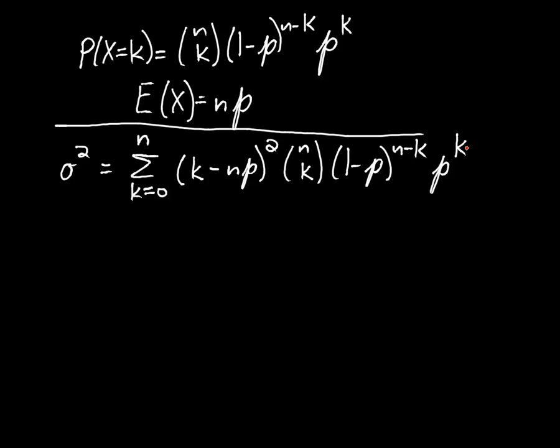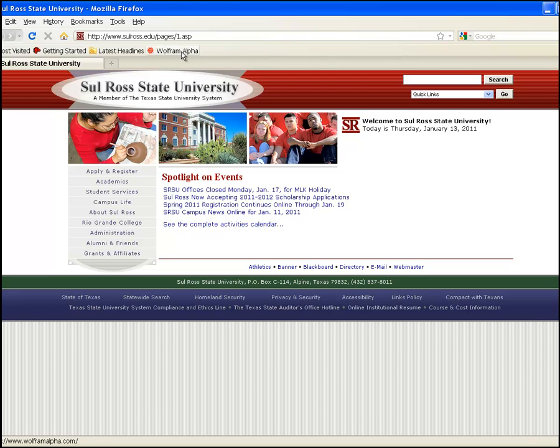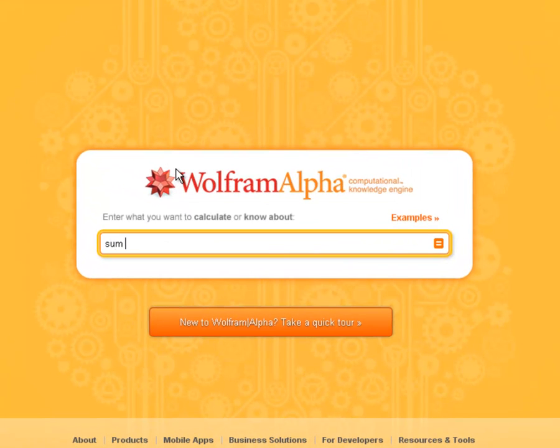This expression is going to be entered in Wolfram Alpha. We're going to sum k minus the mean of a binomial random variable, and you really do have to enter in this asterisk here to tell it to multiply n and p, otherwise it will think that np is meant to be a two-letter word, which it is not.